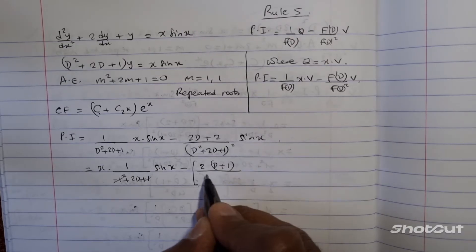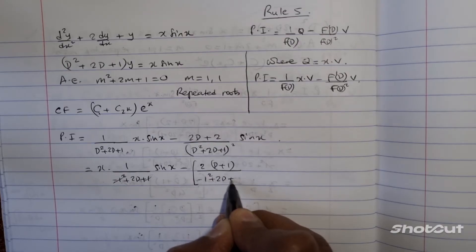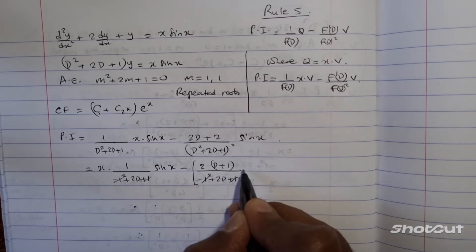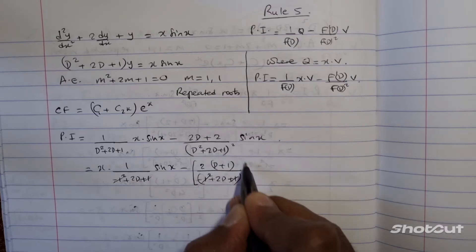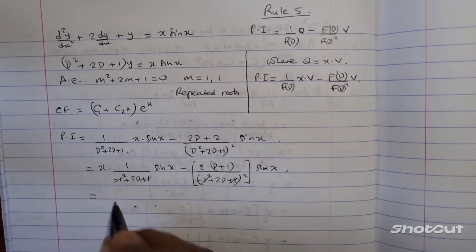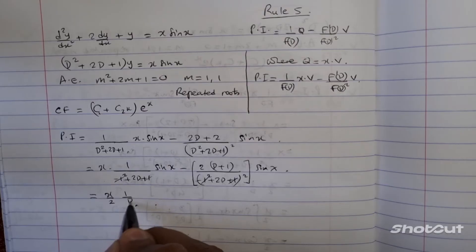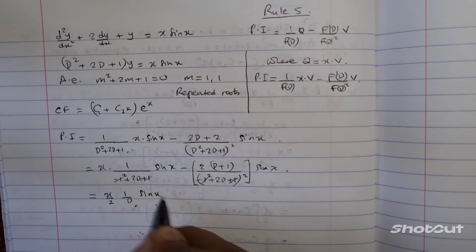all of that divided by, again, negative 1 to the square plus 2d plus 1, where these two is going to cancel out, and, of course, all of that to the square operating on to sine x. So, I've got then, x divided by 2, 1 over d, into sine x, minus,